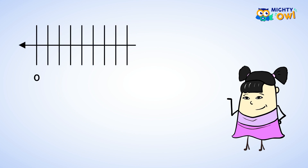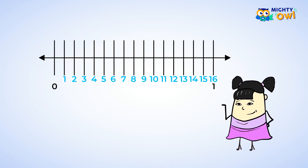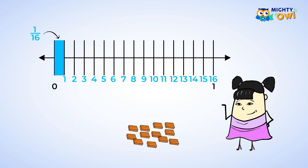Let's look at this number line. How many equal parts do you see here? There are 16 equal parts. Each of these parts represents 1 sixteenth. These parts are getting pretty small — I'm glad this isn't a chocolate bar that we're splitting up. The pieces are getting a little small for me.